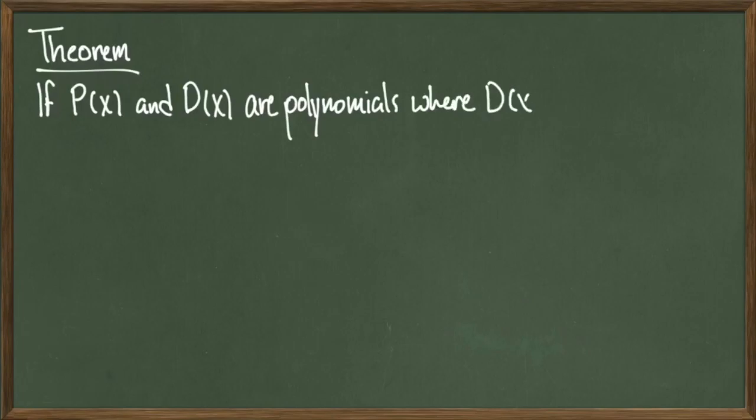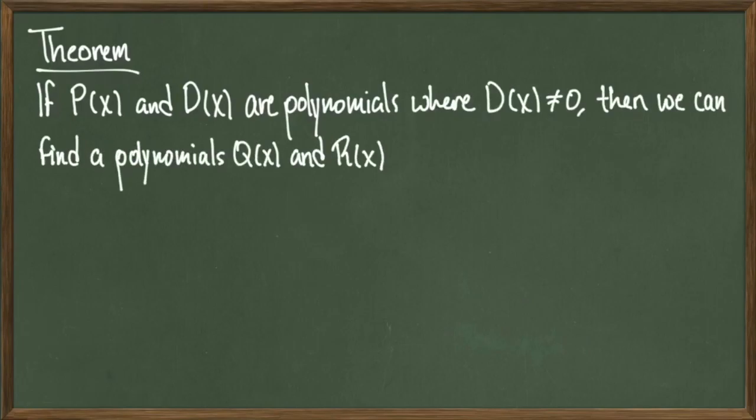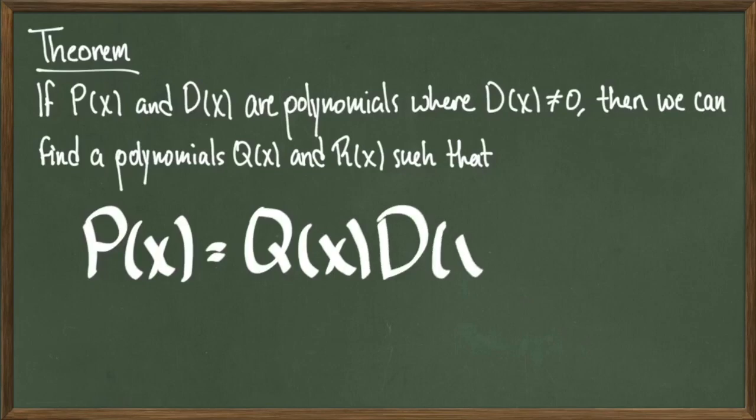It's true that if I'm given polynomials P and D, where D is not equal to zero, then we can find polynomials Q and R such that we get the following equation: P equals Q times D plus R. Since polynomial multiplication makes sense, we can in fact get an answer for Q times D. So this whole quantity is something that we can compute and write down. The whole point is to get the polynomial P and write it as a product of other polynomials where we have the addition of a remainder term.